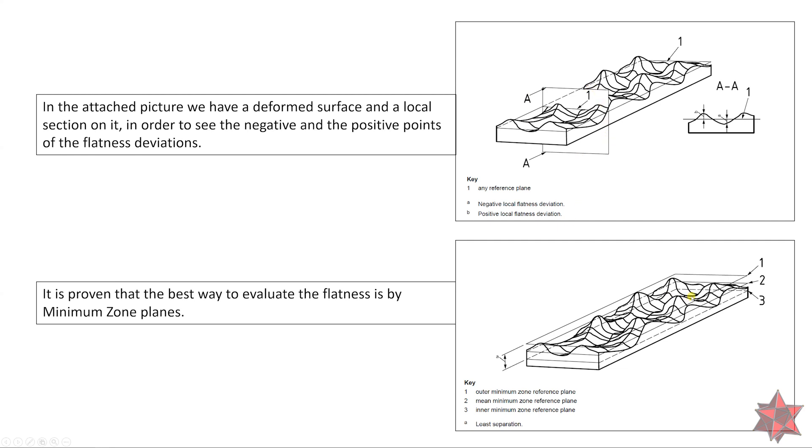It's proven until now that the best way to evaluate the flatness is by minimum zone planes. In this picture we can see that we have an outer minimum zone reference plane, we have a mean minimum zone reference plane born from the outer minimum zone reference plane and the inner minimum zone reference plane. And the actual value of the measurement is the least separation between one and three.